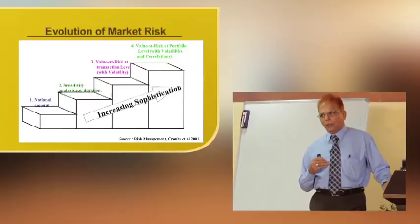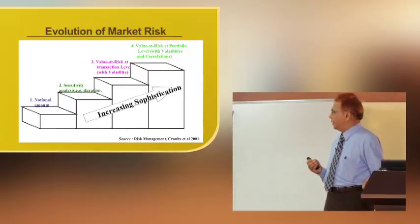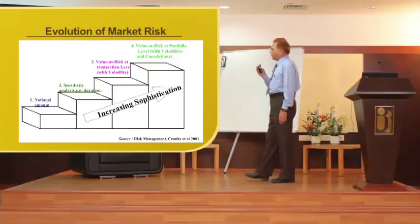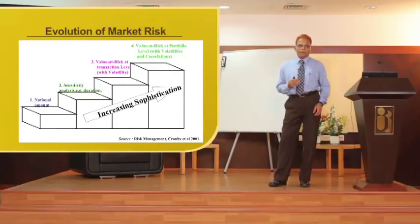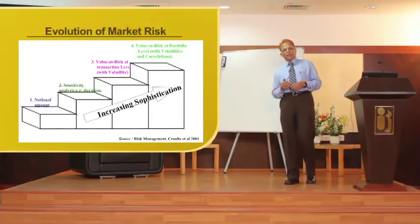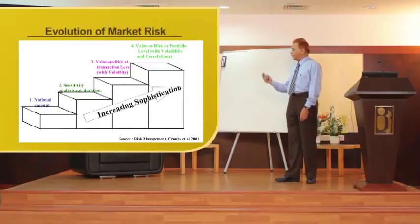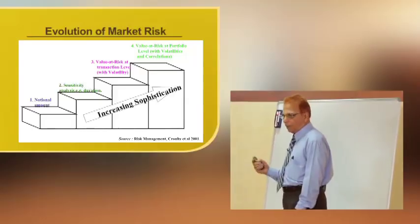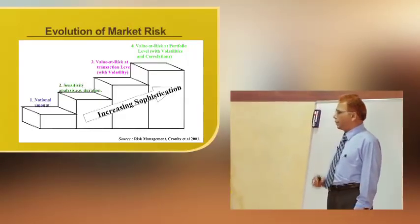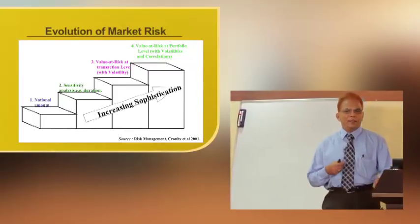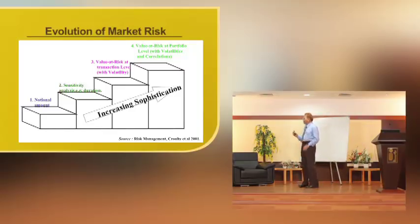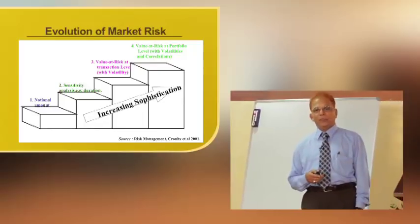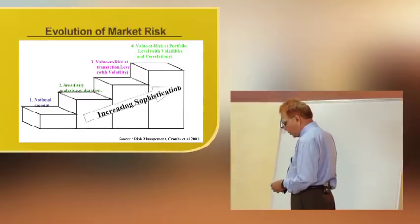The next level is Value at Risk at the transaction level, which considers the volatility of the individual security or position to arrive at the VAR. After that is Value at Risk at the portfolio level, because banks hold different kinds of exposures in the trading book — interest rate, exchange rate, equities — and there are correlations across markets. This last measure is very technology intensive, requiring a lot of simulation to compute portfolio-level VAR.